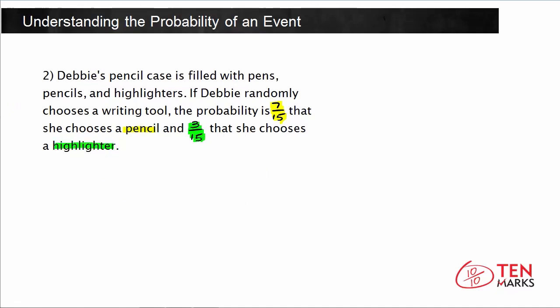If there are 15 writing tools in her pencil case in all, what is the probability that Debbie selects a pen? So what we're trying to find is the probability, or P, of selecting a pen. Now we also were told that there are 15 writing tools in all. The other thing you need to remember is that probability of an event is calculated by dividing the number of times the event can occur by the total number of outcomes.